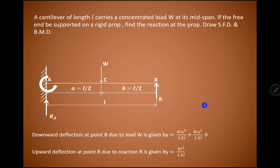Since the deflection at point B is zero, we can say that the downward deflection caused by load W must equal the upward deflection caused by reaction R. Using this compatibility condition, we can find the value of R, and once we know R we can easily draw the shear force and bending moment diagram.